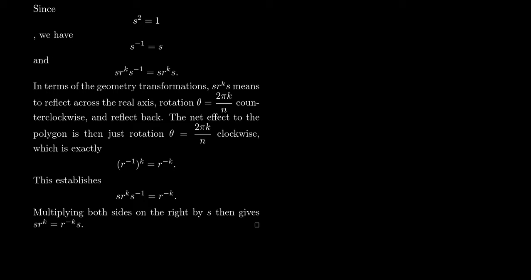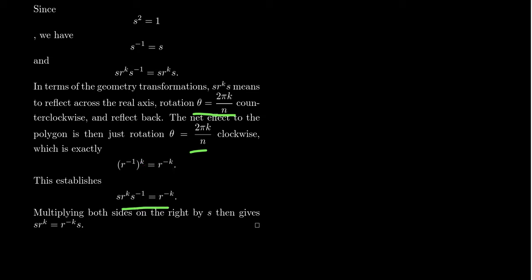S R^k S means: reflect across the real axis, rotate by 2πk/n counterclockwise, then reflect back. The net effect on the polygon is a clockwise rotation by 2πk/n — that is, rotating clockwise by k clicks — which equals R^(−k). This establishes the lemma.